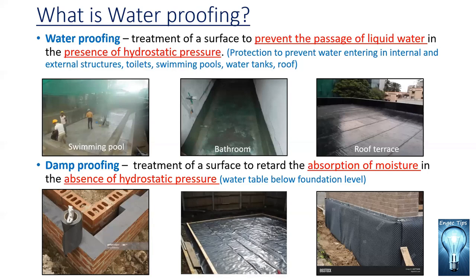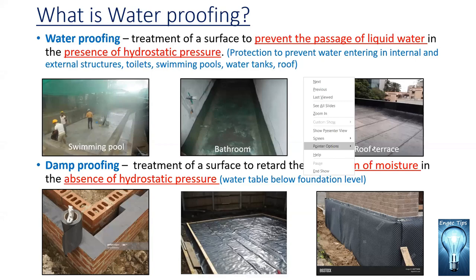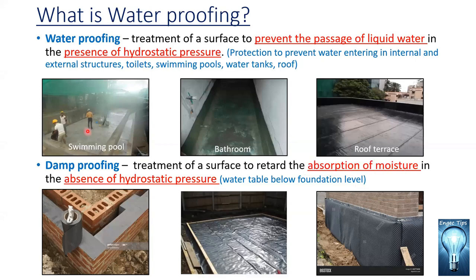As you can see in the figures — a swimming pool, a bathroom, and a roof terrace — in the swimming pool, water is always retained in the structure, so the surface is always under hydrostatic pressure. We have to select the type of waterproofing application considering that hydrostatic pressure.